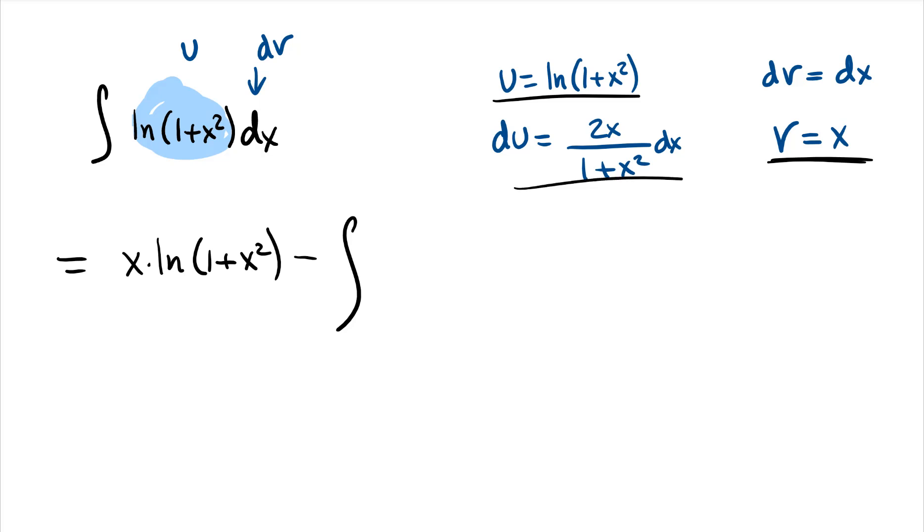But what do we do at this point? Oh I remember, I remember. Because a u sub is not going to work. Let's take out that 2 real quick. We get x squared over 1 plus x squared dx. What do we do? U sub sure as heck ain't gonna work here. Look at this, the degree of the top is the same as the degree of the bottom. Let's do long division.